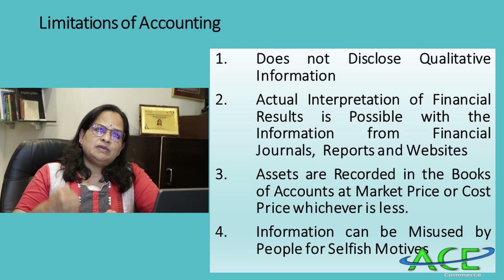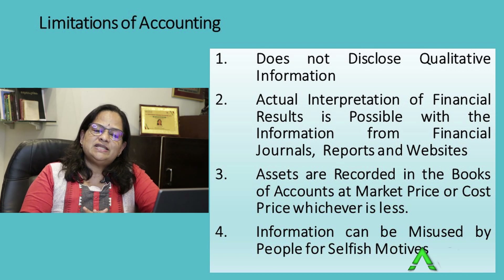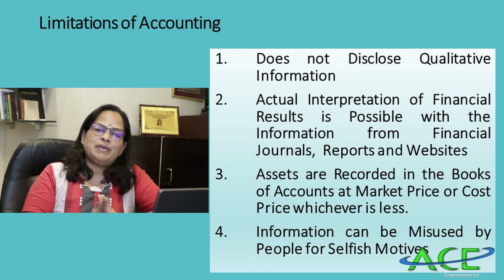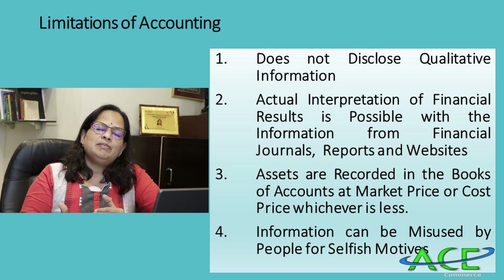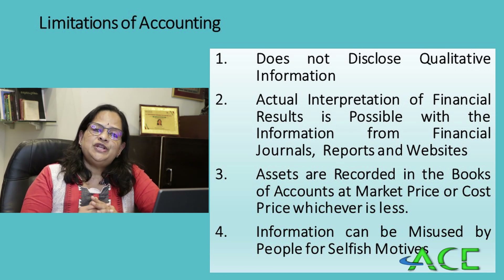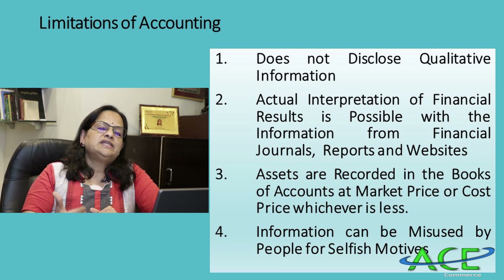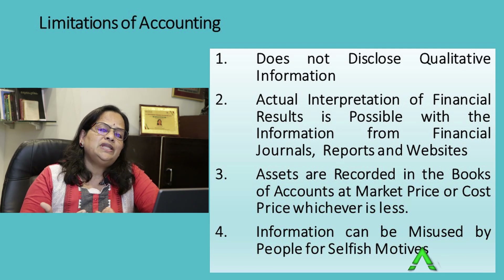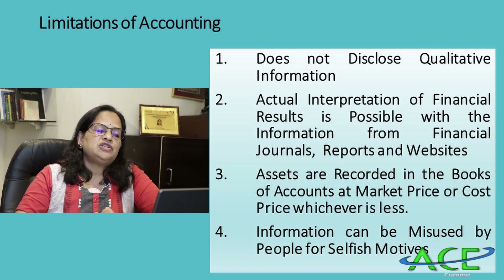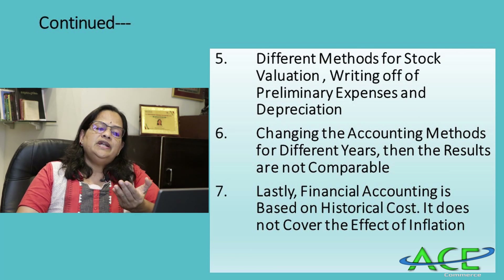Another limitation is that information can be misused by people for selfish motives. For example, an owner might bribe an auditor to produce fabricated financial statements, then use those statements to obtain loans from a bank. History has proved this — some people have cheated banks, financial institutions, and investors by presenting a false picture of their financial statements.